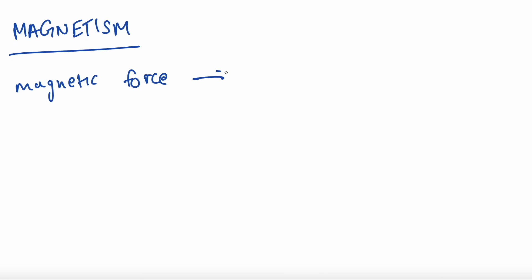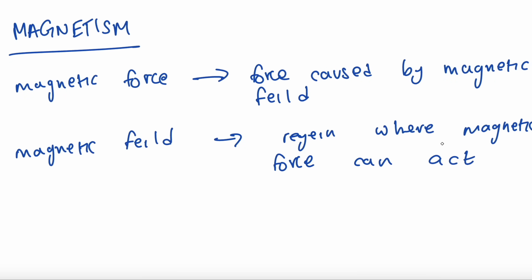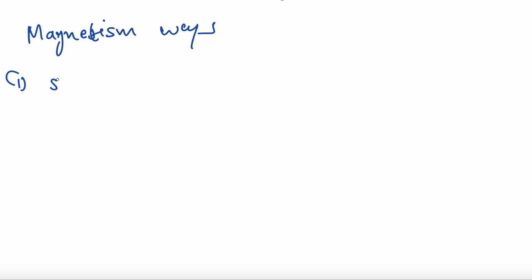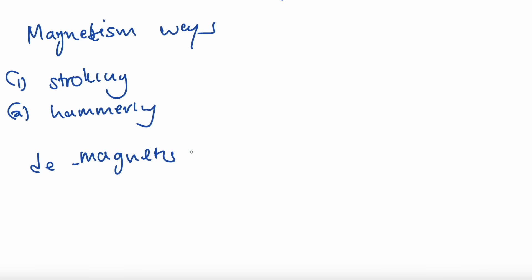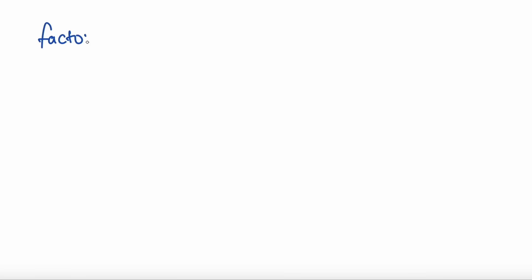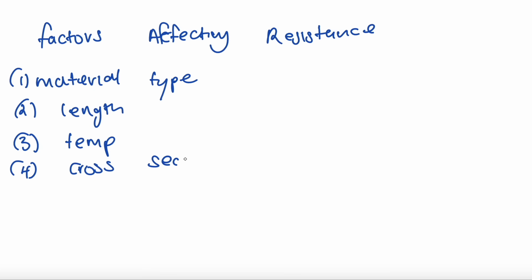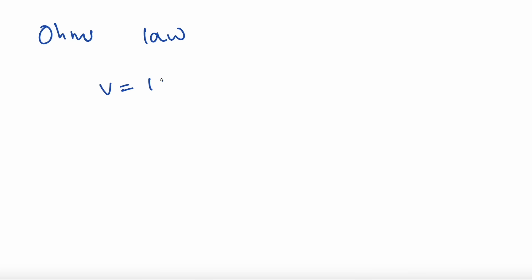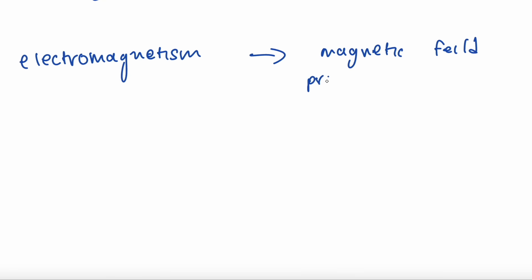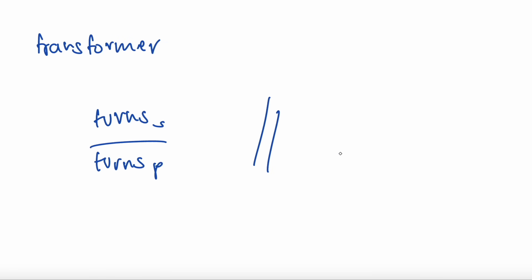Let's have a look at magnetism. A magnetic force is a force caused by a magnetic field, and a magnetic field is the region where the magnetic force can act. Methods of magnetizing include stroking and hammering, and demagnetizing methods are hammering, heating, and placing in AC. Factors affecting resistance are material, length, temperature, and cross-sectional area. Ohm's law states V equals IR. Electromagnetism is the magnetic field produced due to a passing current. For a transformer, we use the ratio of turns.